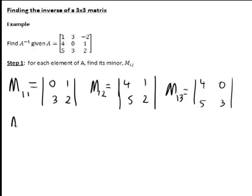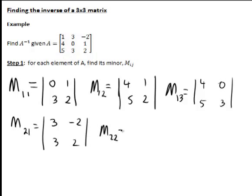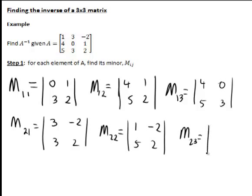Going to the next row, M21 for the second row, first column, will be the determinant of [3, -2; 3, 2], excluding the second row and first column. M22 becomes the determinant of [1, -2; 5, 2], excluding second row and second column. M23 similarly becomes the determinant of [1, 3; 5, 3].